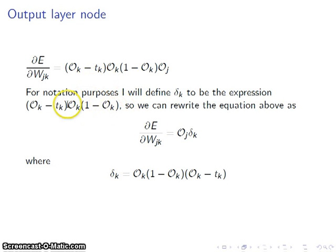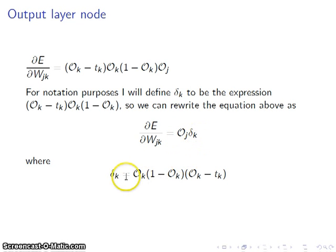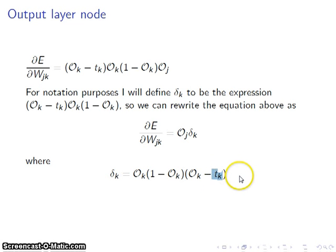So referring to this expression as delta sub k, we can rewrite the derivative of error with respect to the weight from j to k as the output of j times delta sub k, where delta sub k is all of the terms involving subscript k. That's delta k and how the weight affects the error for the output layer — this involves the T sub k value, which is what we desire our network to output. And we will use this to propagate the error backwards as we move forward.